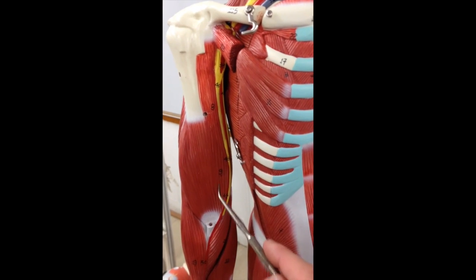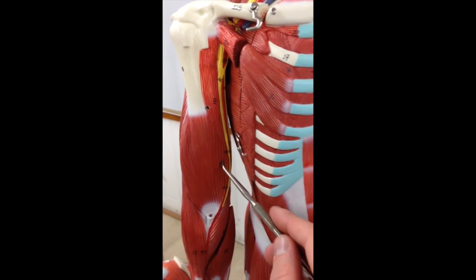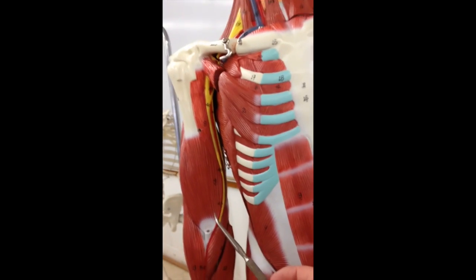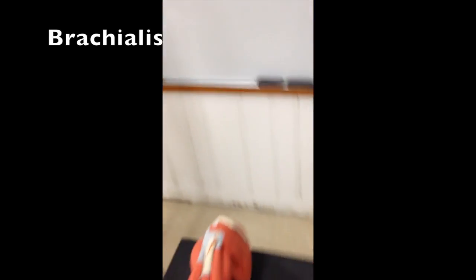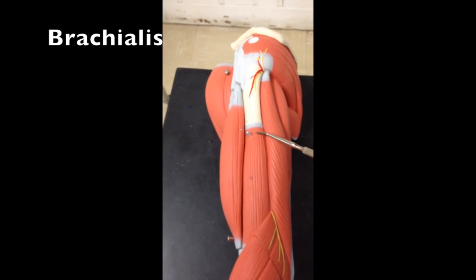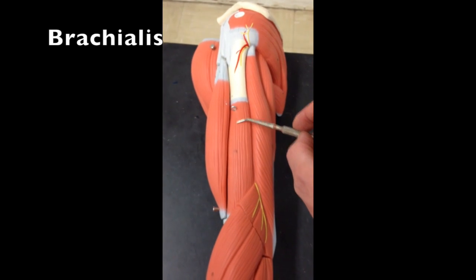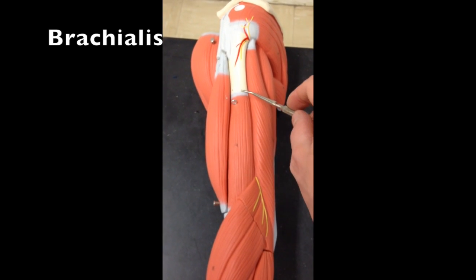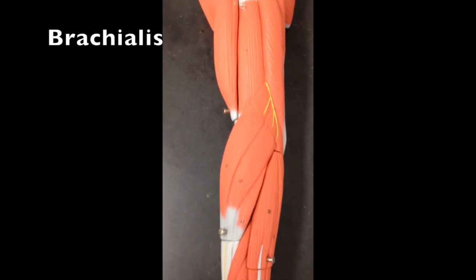The origin of the brachialis is on the anterior surface of the humerus, and it inserts on the coronoid process of the ulna. It is also a flexor and it is the strongest flexor at this joint.